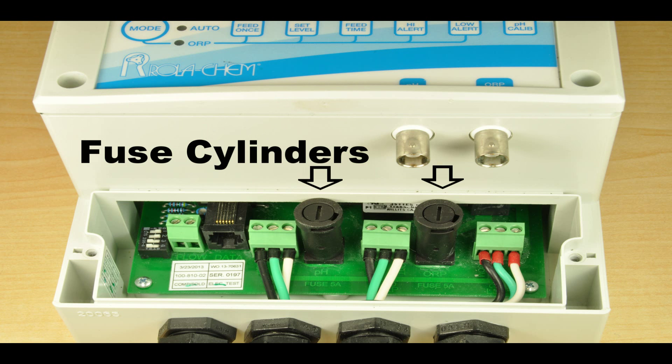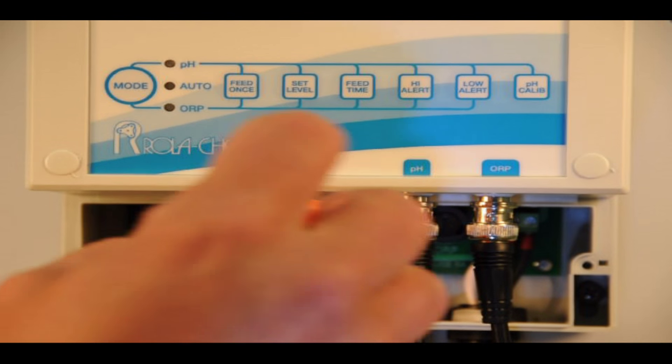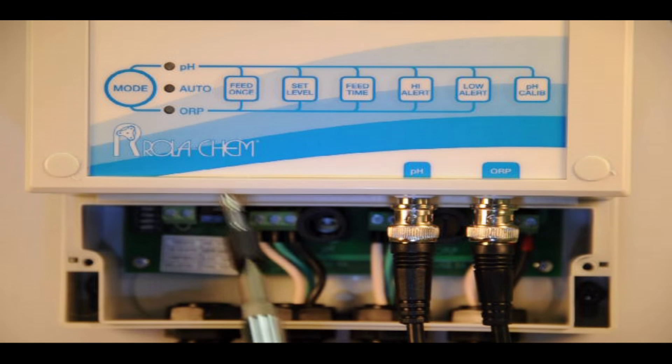Once the panel is removed, there's two cylinders on the lower part that have the fuses. It's a quarter inch counter-clockwise removal to get the fuse out.